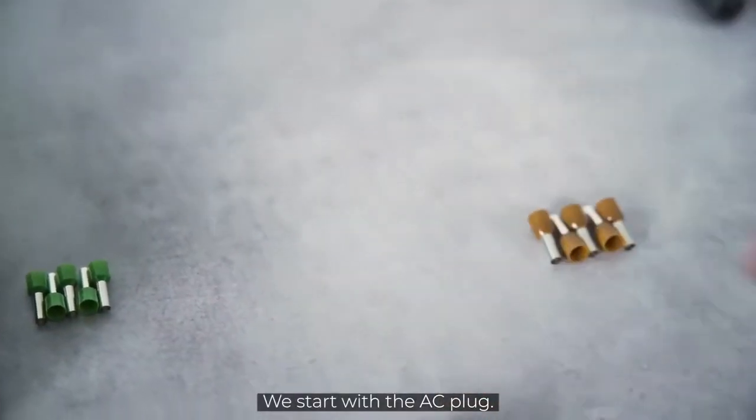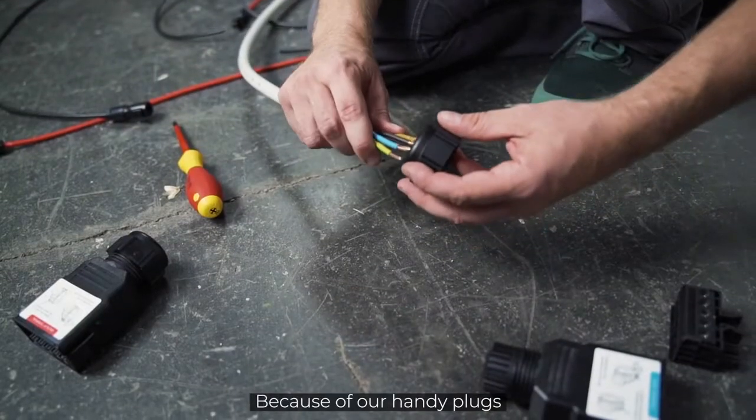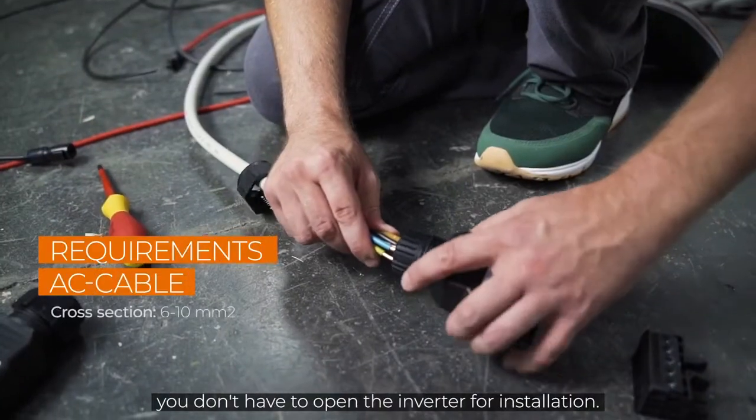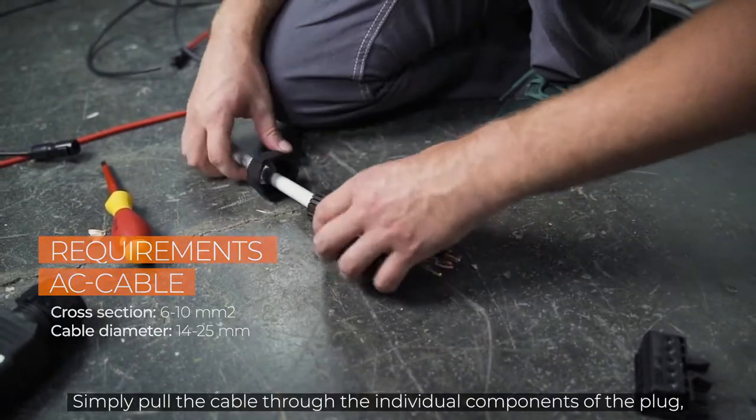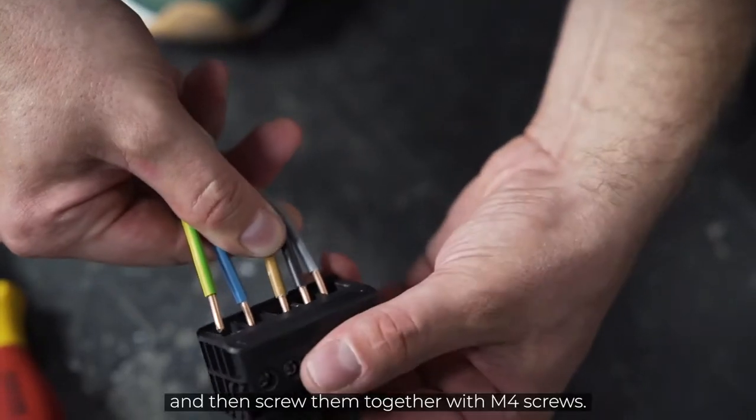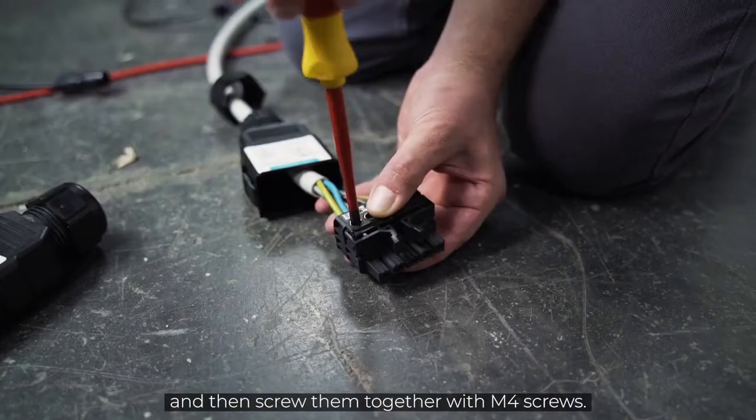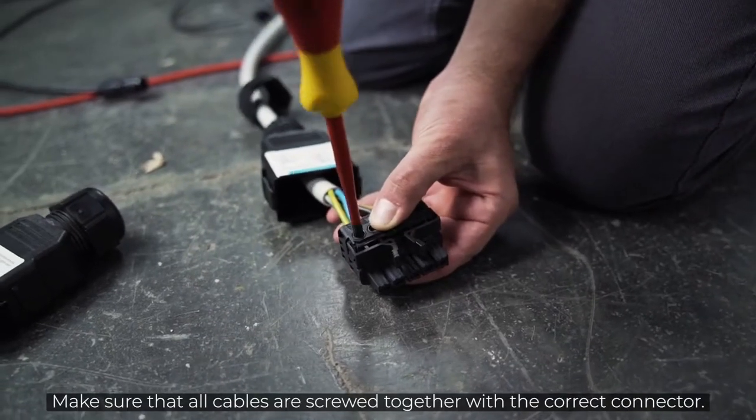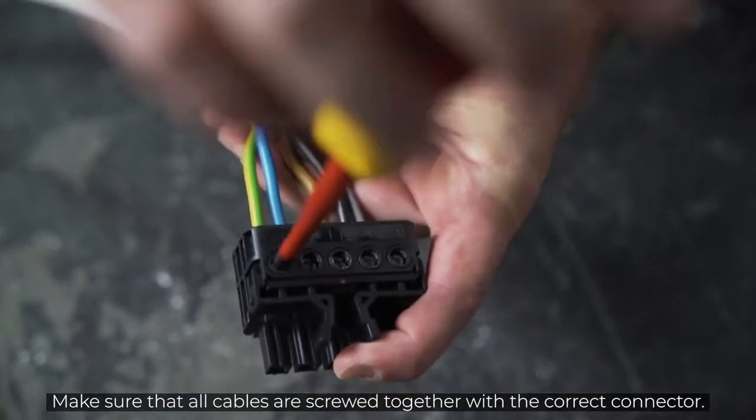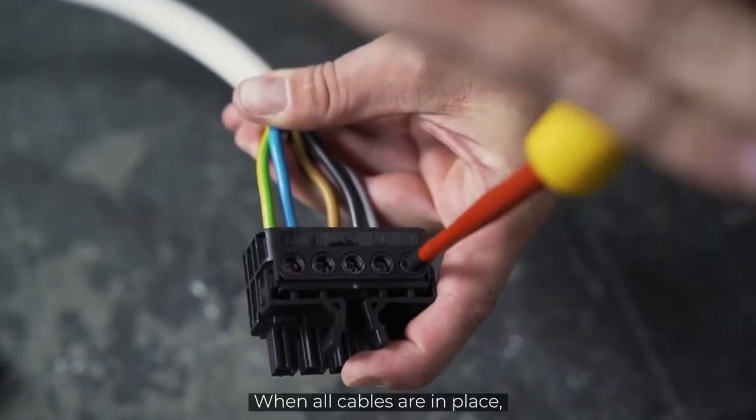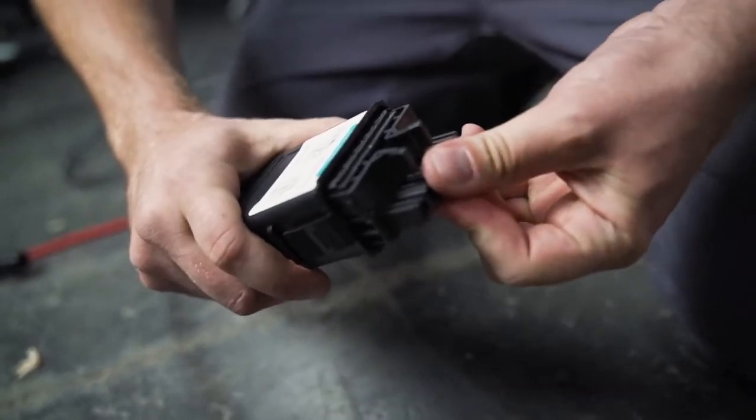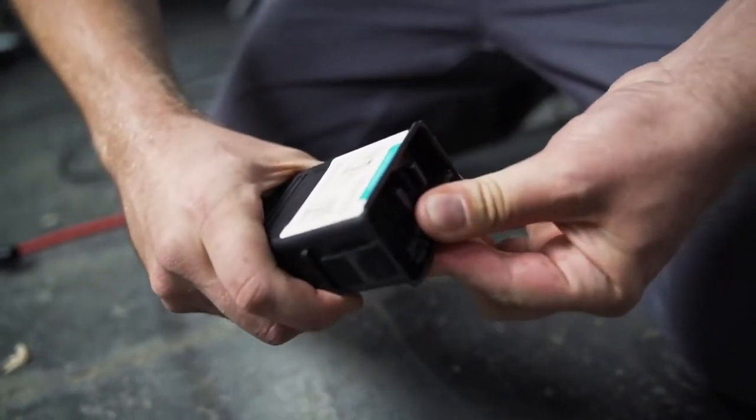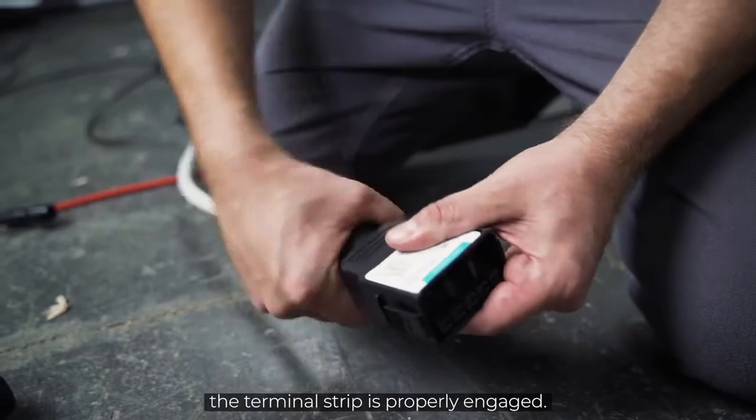We start with the AC plug. Because of our handy plugs, you don't have to open the inverter for installation. Simply pull the cable through the individual components of the plug and then screw them together with M4 screws. Make sure that all cables are screwed together with the correct connector. When all cables are in place, pull the terminal strip into the housing of the plug. When you hear a click, the terminal strip is properly engaged.